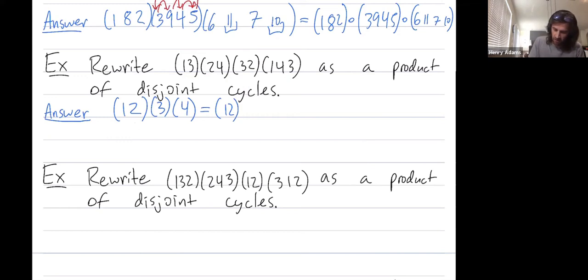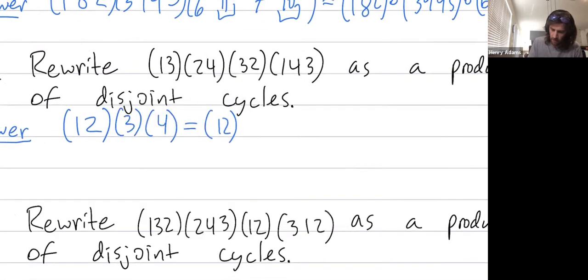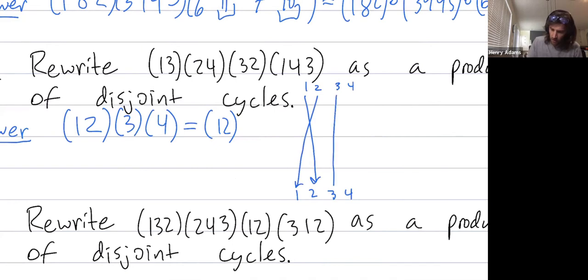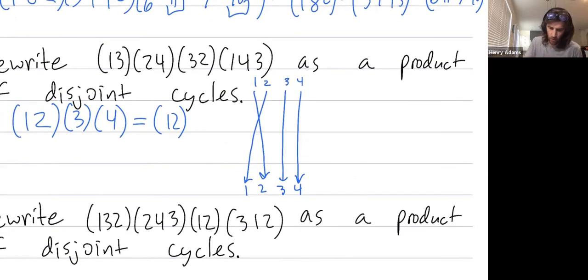So if I had to draw a picture for this, I would draw it as follows. In the end, this permutation sends one to two and two back to one, while three and four just stay where they are — so it's simply the transposition (1 2).